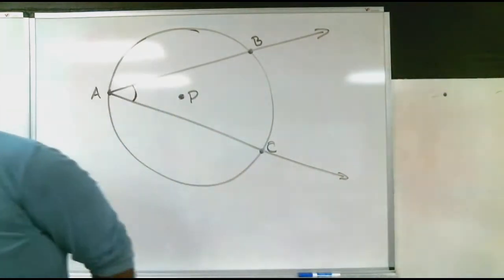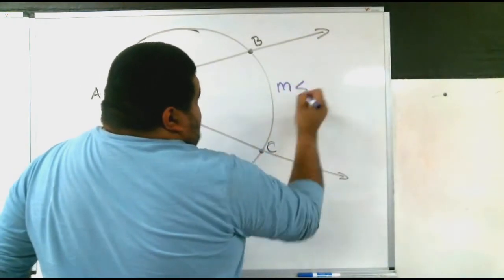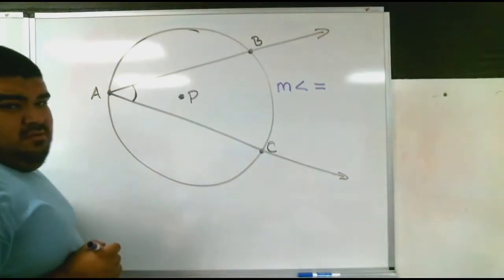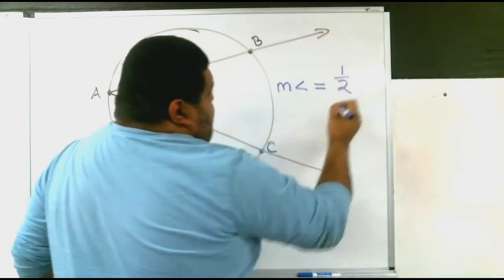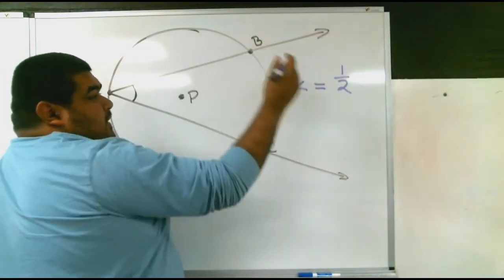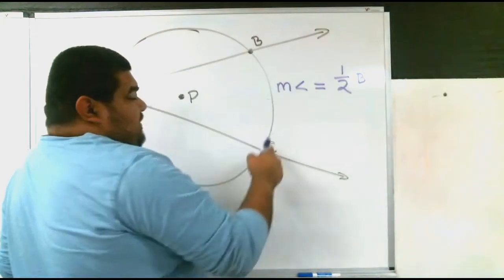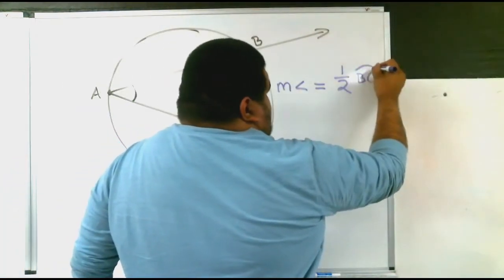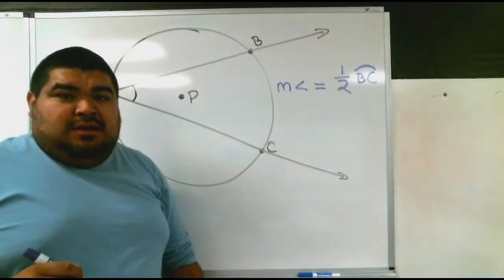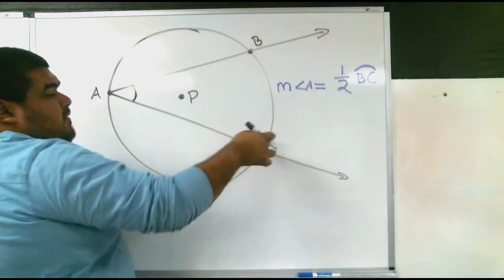To find the measurement of the angle, which is angle A, equals one half the arc BC. So if we are going to find measurement angle A, it equals half the arc BC.